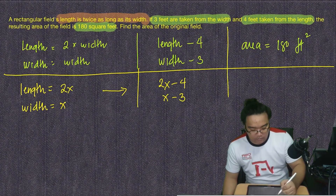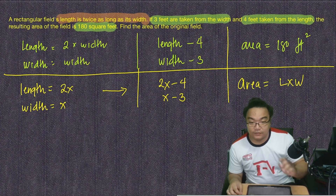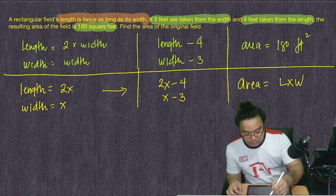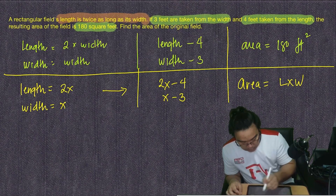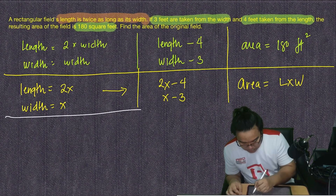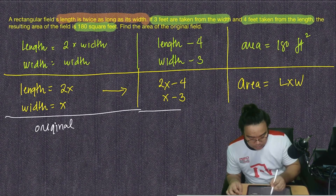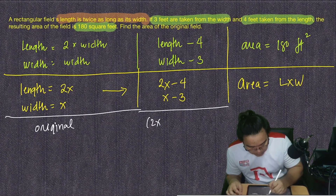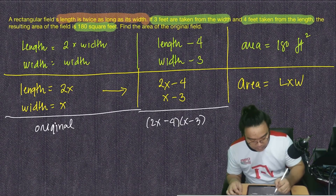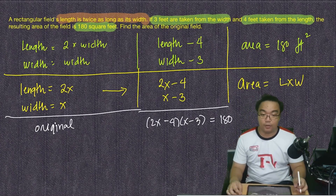We know that area is obtained by multiplying length times width. So we multiply the new length and new width: (2x − 4)(x − 3) = 180. This is the polynomial equation we have to solve — it is a quadratic equation.